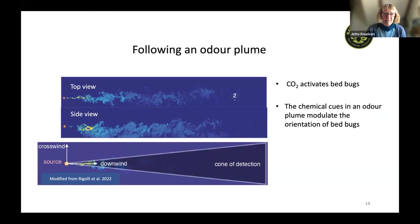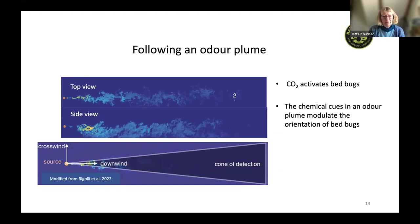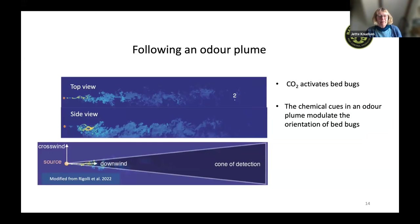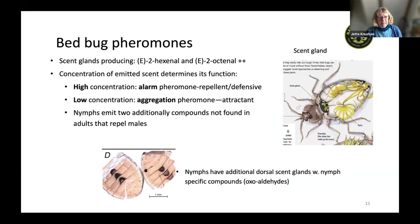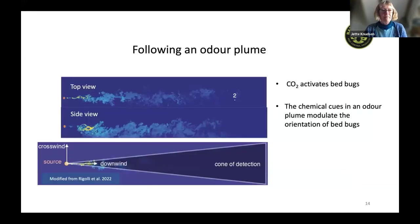The seemingly random movement of bed bugs is explained by how odor plumes move in air. A study by Riffell et al. shows the odor plume from an emitting point spreading sideways and broadening — creating a cone of detection. A bed bug moving only in two dimensions on a surface will repeatedly lose and regain the plume, causing it to turn and cast around each time. This searching pattern looks random, but eventually the bed bug gets close enough to the emitter to feed.